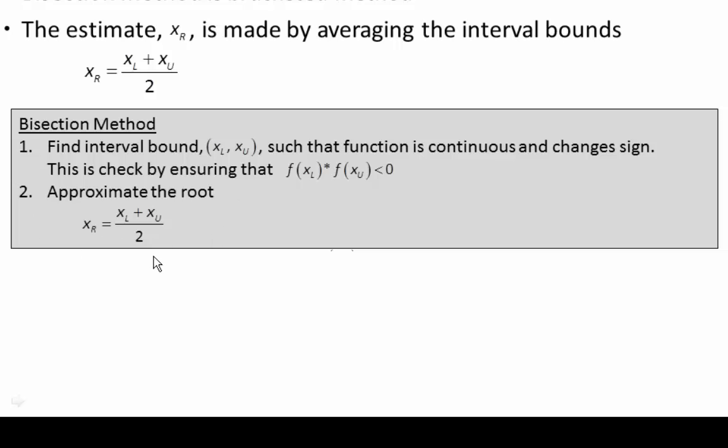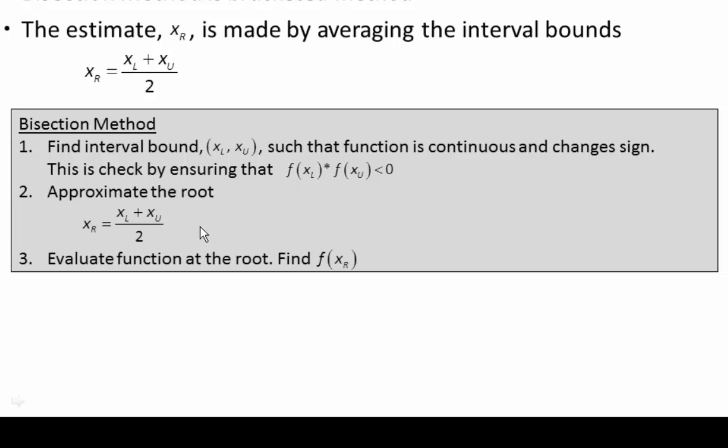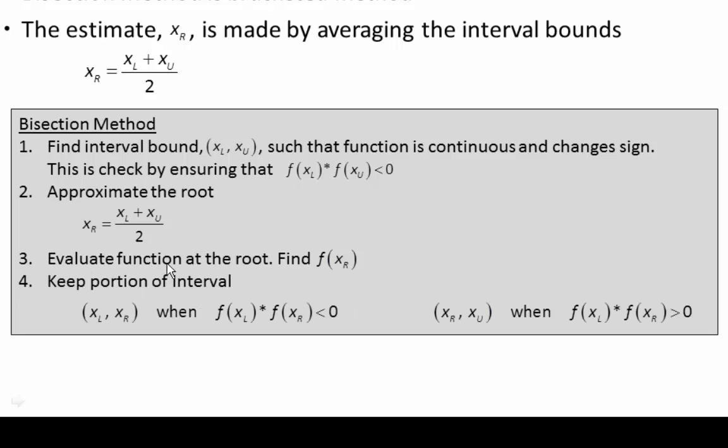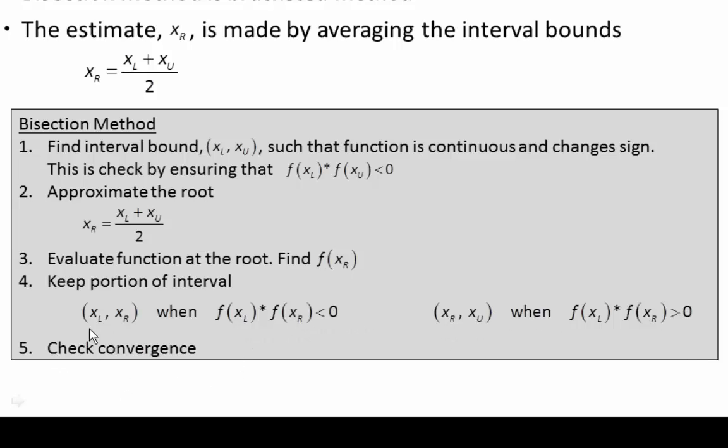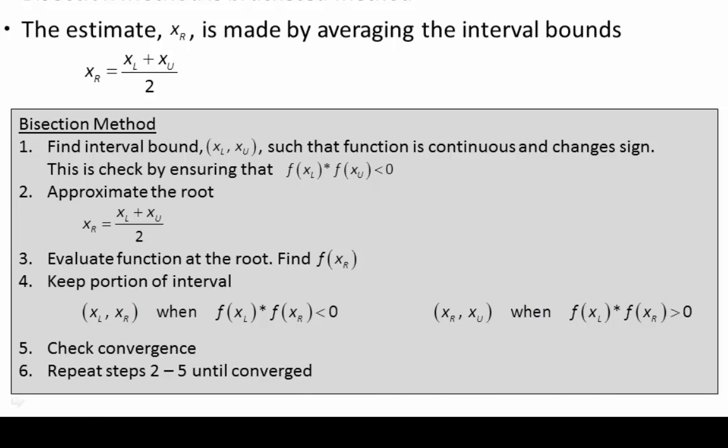Next, we approximate the root by finding the average of the bounds. Then you evaluate the function at the root, and then we keep one portion of the interval. We keep the left-hand side if the function at the lower bound times the function at the root is less than zero, or we keep the right-hand side if this is not true. Then we check for convergence using something like an approximate percent relative error, as shown in previous videos. And then we repeat steps two through five until we end up with a converged solution.